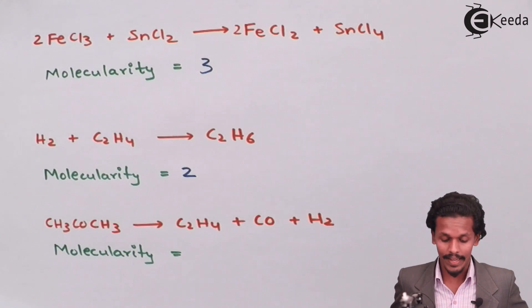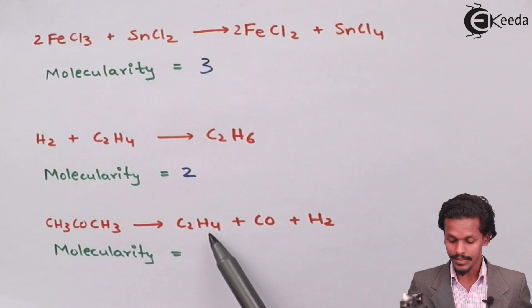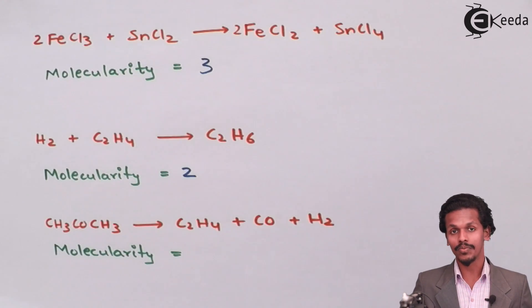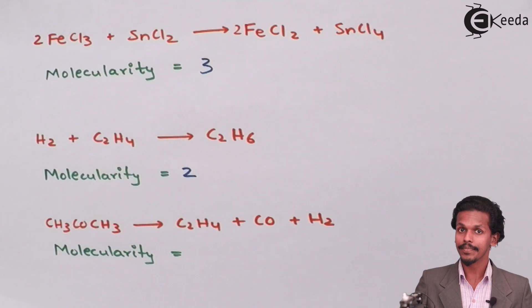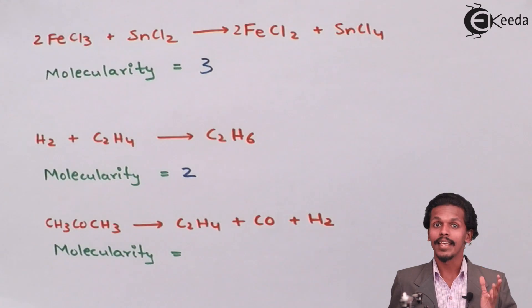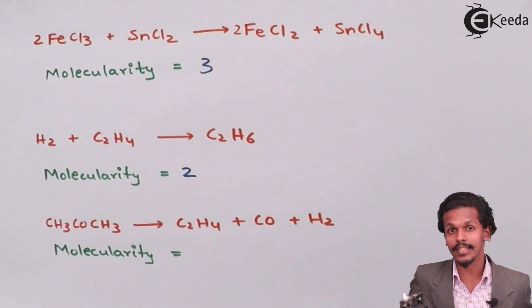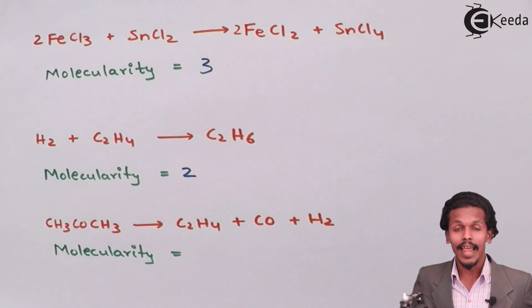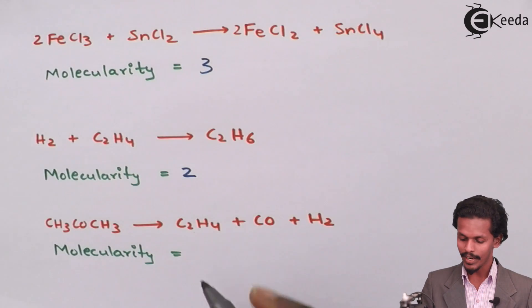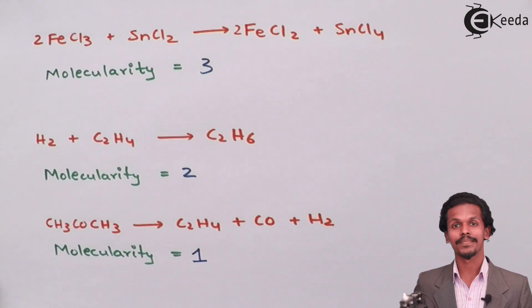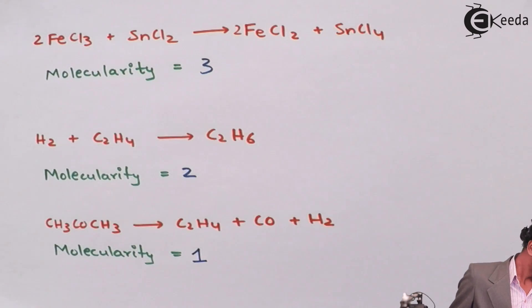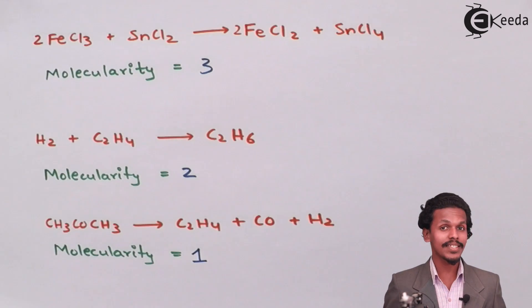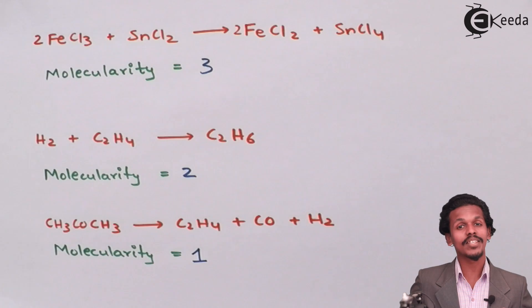While for this one, when acetone gives us ethene plus carbon monoxide and H2, what would be the molecularity? Yes, again we have to focus the reactant molecules only and in this case one mole of reactant is involved that is of acetone and hence the molecularity is one.